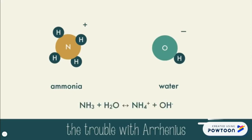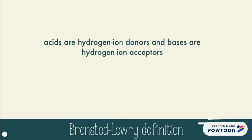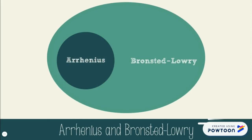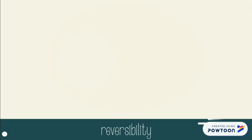In the Bronsted-Lowry definition, acids are hydrogen ion donors while bases are the hydrogen ion acceptors. Arrhenius is a smaller definition of acids and bases. Bronsted-Lowry encompasses all of the Arrhenius acids and bases and then adds more to give us a better definition of what an acid and a base actually is.